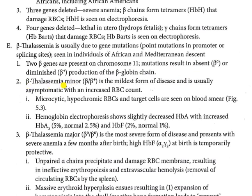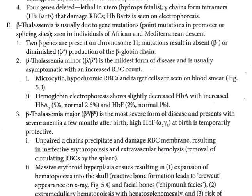Beta thalassemia minor is a mild form of disease. It presents with microcytic, hypochromic anemia, with RBCs showing target cells.